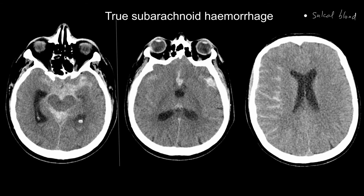True subarachnoid hemorrhage, on the other hand, tends to cause more density which is thicker around the basal cisterns, and you also get sulcal blood. This is the most important difference between true subarachnoid hemorrhage and the pseudo-subarachnoid sign. In a pseudo-subarachnoid hemorrhage you would not get the high attenuation in the sulci along the cerebral convexity.